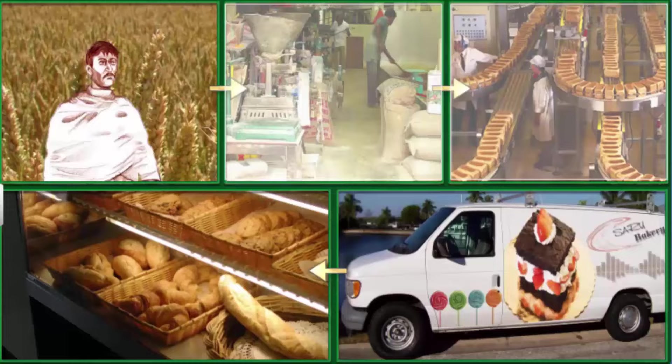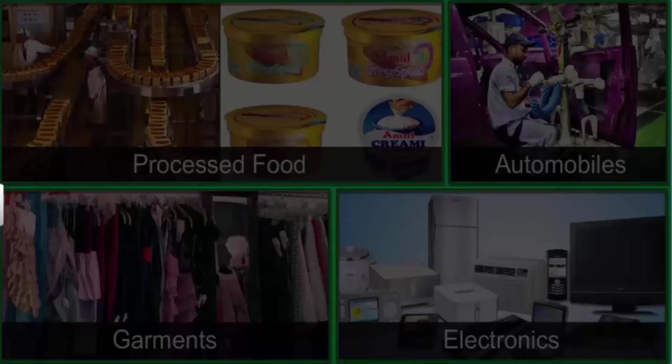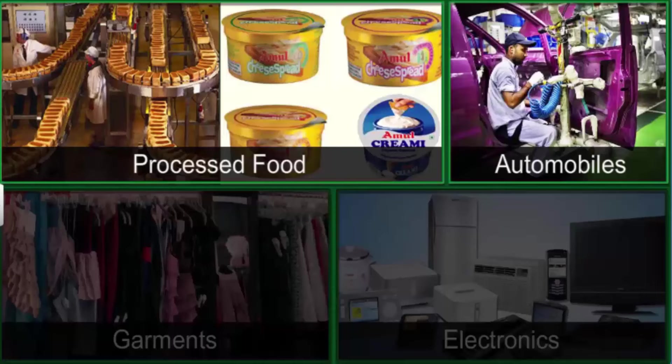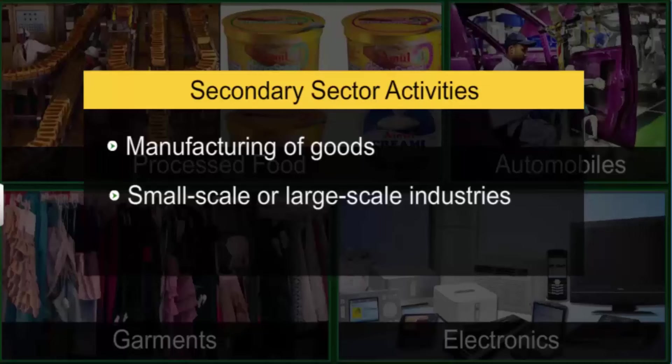Activities that use natural products or other raw materials for industrial manufacturing of goods are called secondary sector activities. The secondary sector includes all kinds of manufacturing activities, from food processing to manufacturing of automobiles, garments, and electronics — in both small-scale and large-scale industries. Thus, the secondary sector is also called the industrial sector.